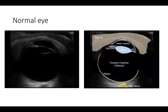Now let's see what that looks like on ultrasound. This is an image of a normal eye — the cornea is at the top of your screen closest to your transducer, you're seeing the lens below that and then the posterior chamber or the vitreous, and we want to see the optic nerve just posterior to that posterior chamber.